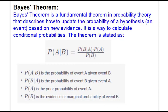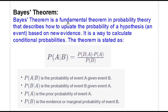So this is Bayes' theorem. Bayes' theorem is a fundamental theorem in probability theory. It describes how to update the probability of a hypothesis — it is called an event — based on new evidence. It is a way of calculating conditional probability. Suppose we have two events A and B: the probability of A given B equals the probability of B given A, multiplied by the probability of A, divided by the probability of B.